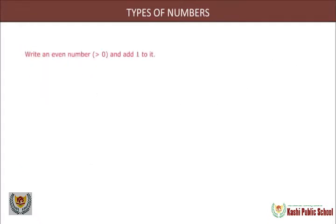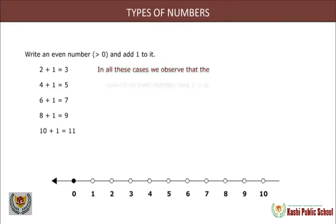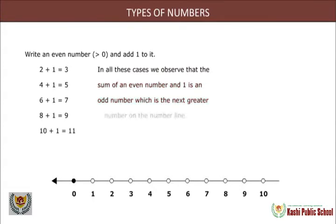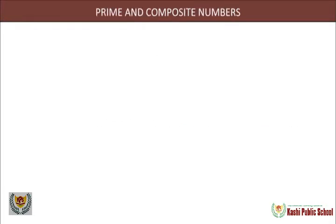Write an even number greater than zero and add one to it: 2+1=3, 4+1=5, 6+1=7, 8+1=9, 10+1=11. In all these cases we observe that the sum of an even number and one is an odd number, which is the next greater number on the number line. Thus, any even number greater than zero plus one equals the next greater odd number.